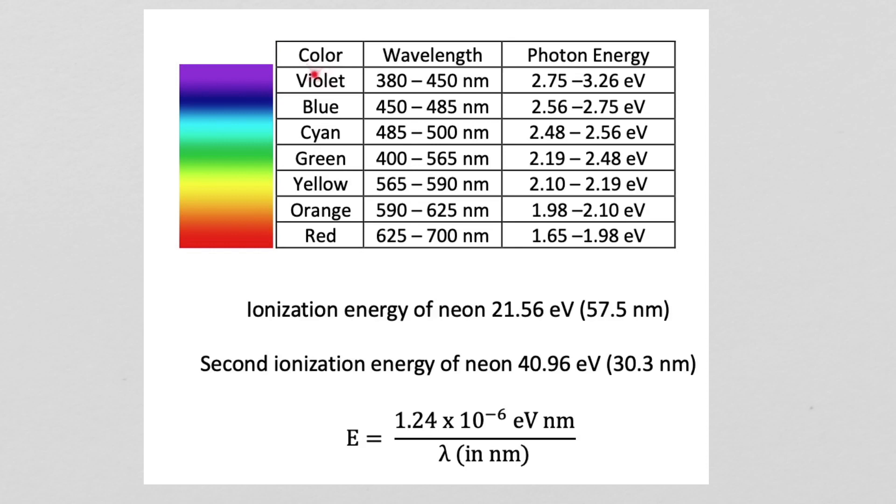The visible spectrum goes from violet to red corresponding to wavelengths of 380 nanometers to 700 nanometers. Light is an electromagnetic wave. When you have a beam of light at just one wavelength, that beam of light can increase or decrease in energy by a fixed amount called the photon energy. And that photon energy is given by this equation, and the size of that energy of those photons increases as the wavelength decreases. So a beam of light at 625 nanometers can only increase or decrease in energy by steps of 1.65 electron volts.